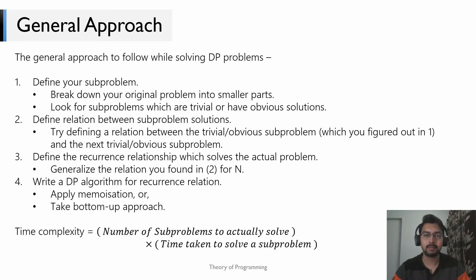Second, define the relation between sub-problems. A hint is to look at the relationship between the smallest sub-problem and the next smallest — in Fibonacci that's F(3) = F(2) + F(1). Third, define the recurrence relation that solves the actual problem: generalize the relationship for n, giving fn = fn−1 + fn−2. Once defined, validate it with random test cases.